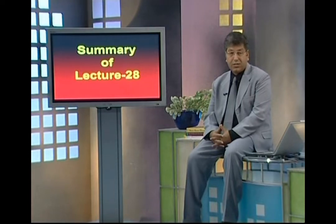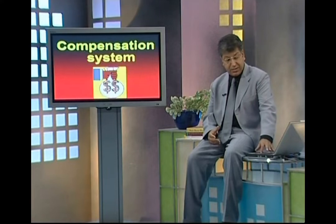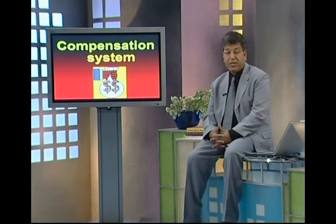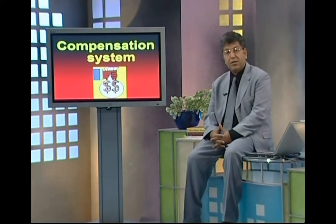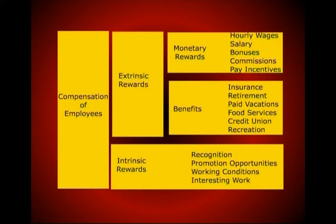Let us go back and review our previous lecture, lecture number 28. In that lecture we tried to understand the compensation system. After job evaluation, after pricing the job, we shifted to our next topic — the compensation system. When we are talking about the compensation of an employee, we can divide them into two broader categories: intrinsic and extrinsic rewards, or compensation. In extrinsic, we can have direct financial or indirect — we call them the benefits. And in intrinsic, we can talk about recognitions, promotion opportunities, interesting work, etc.